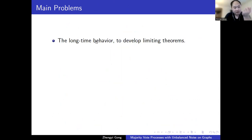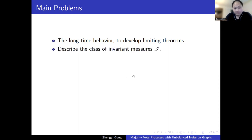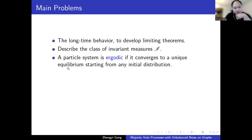The main problems to consider are: studying long-term behavior of the majority vote process, developing limiting theorems, and finding the class of invariant measures. A particle system is called ergodic if it converges to a unique equilibrium starting from any initial distribution — whether deterministic (all-zero or all-one) or random. The graph is assumed to be infinite with uniformly bounded degree.